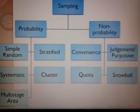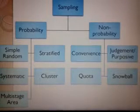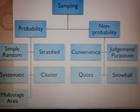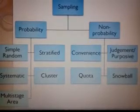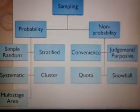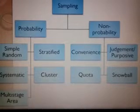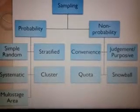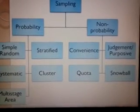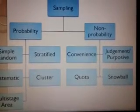As the diagram shows, sampling can be divided into probability sampling and non-probability sampling. Probability sampling can be further divided into simple random sampling, stratified sampling, systematic sampling, cluster sampling, and multistage area sampling. Non-probability sampling can be further divided into convenience sampling, judgment or purposive sampling, quota sampling, and snowball sampling. We will discuss different categories one by one.